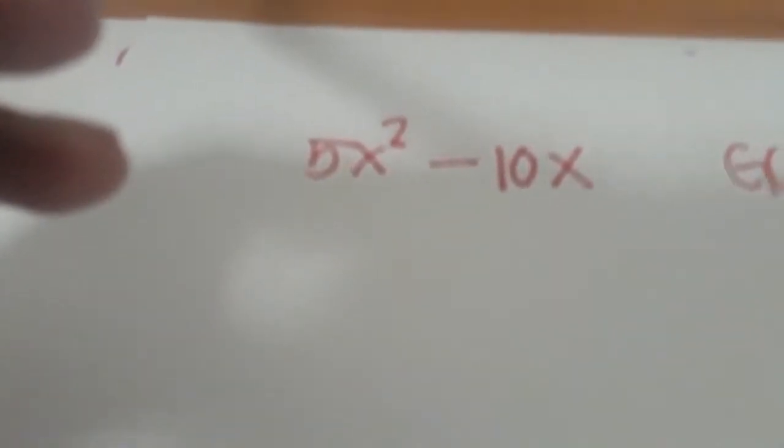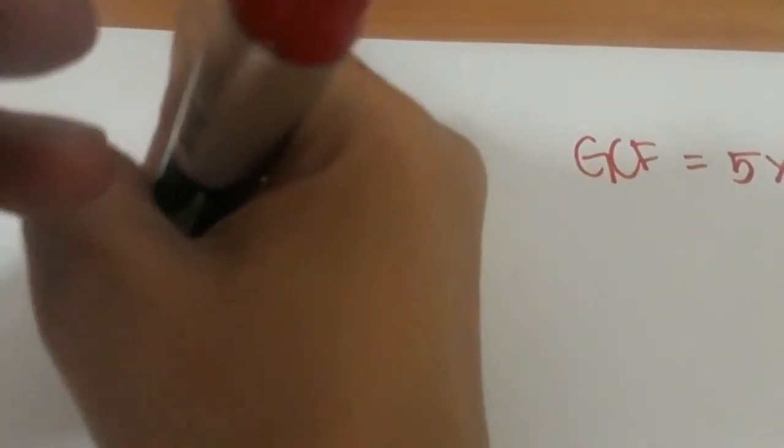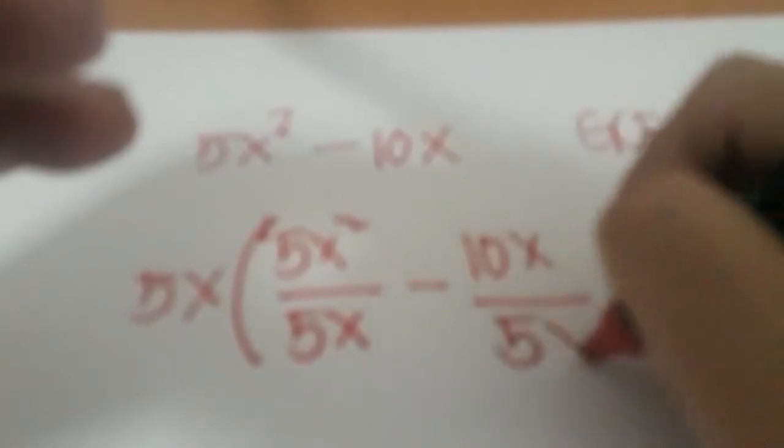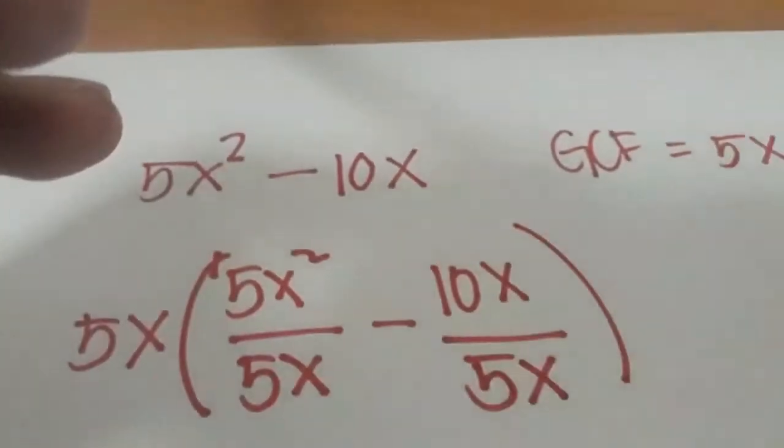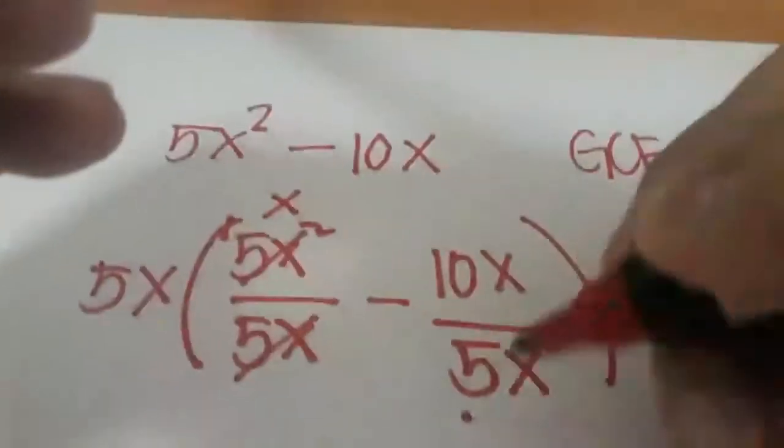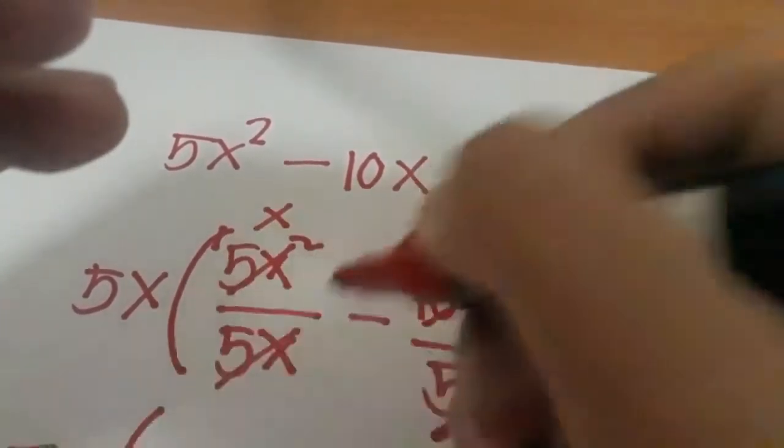So how do we do that? We just multiply the GCF. We write down the original equation and we divide it to the common factor. Then this will give us x, and this will give us 2. So I just have to write it down, there you go.